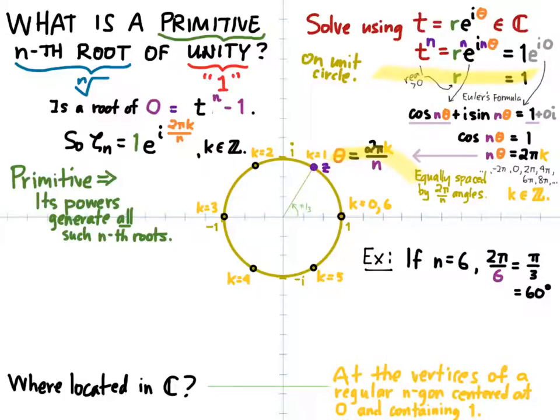So how about our k equals 1 example? This is e to the pi i over 3, or cosine of pi over 3 plus i times the sine of pi over 3. This is really 1 half plus i times radical 3 over 2. What are its powers? Well, if z is there, then z squared is over there at k equals 2. z cubed is at k equals 3. z to the 4th, z to the 5th, z to the 6th is back at the real number 1. After all, z to the 6th is equal to 1 because z is the 6th root of unity.